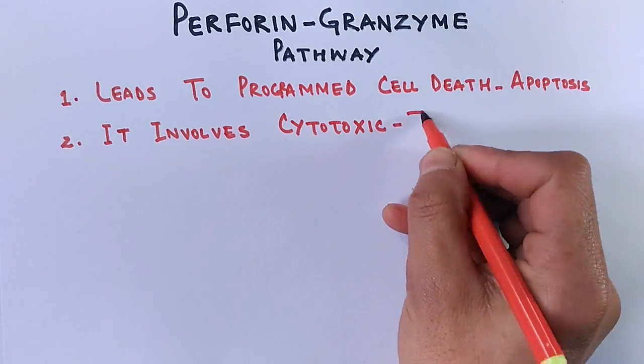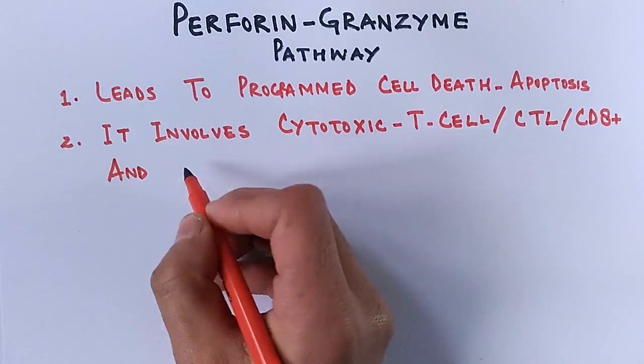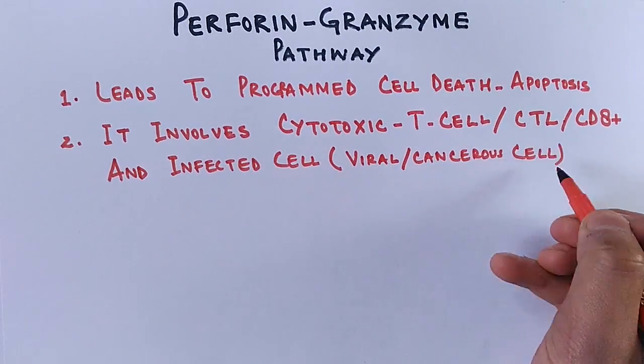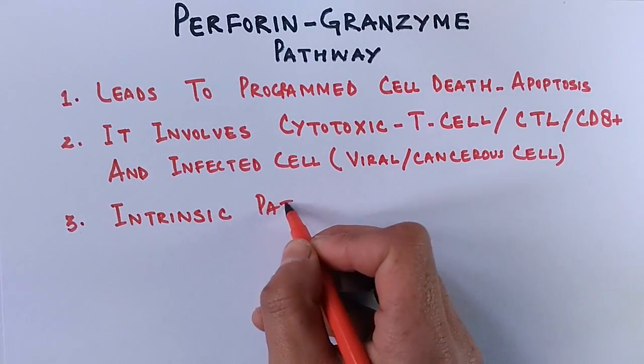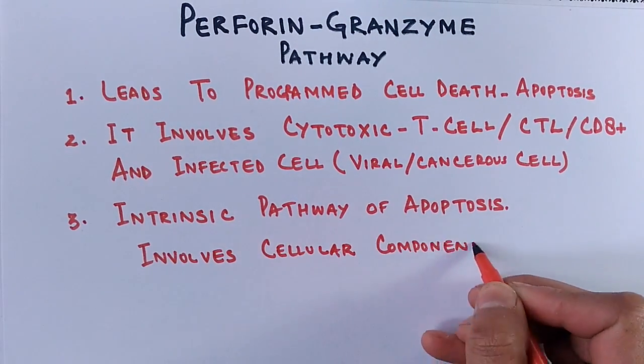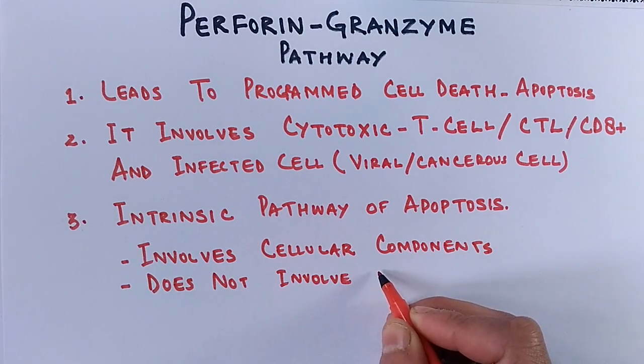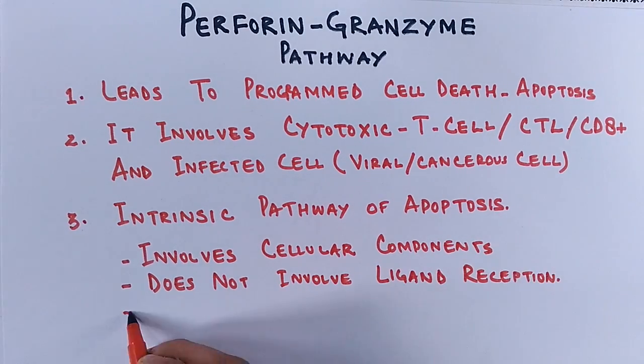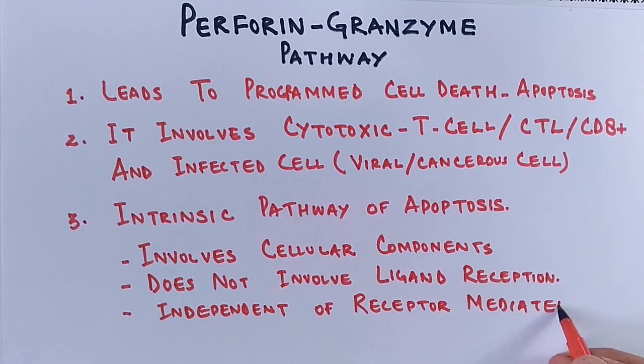Second point here is that it's an interaction between cytotoxic T cell and an infected cell. Third point is that it's an intrinsic pathway of apoptosis that involves cellular components of the cell and does not involve any ligand-receptor interaction like we have seen in Fas pathway, and it's independent of any receptor.